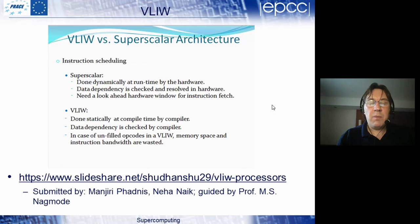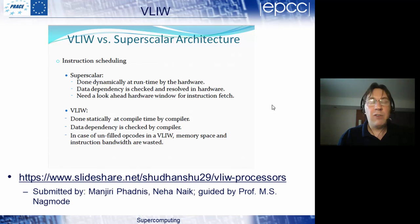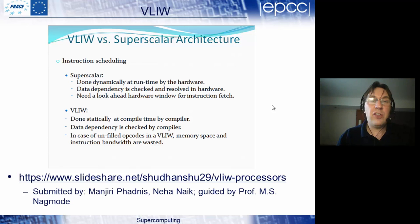Superscalar is the ability of a single core to do more than one thing at once. Modern CPU cores can handle multiple instructions simultaneously — for example, an integer instruction, a floating point multiply, and a floating point addition all thrown at it at the same time. If it's able to, it will execute them simultaneously. This is called superscalar, and it is done dynamically at runtime by the hardware.